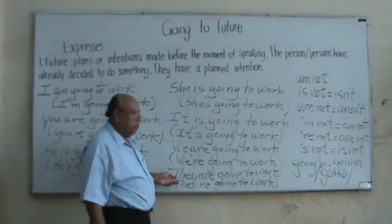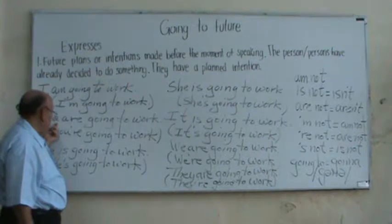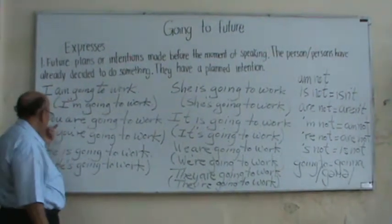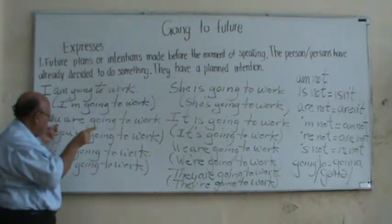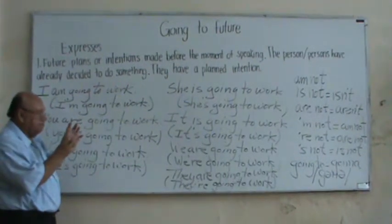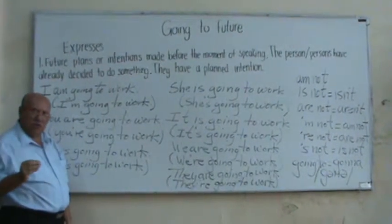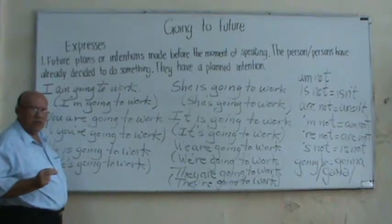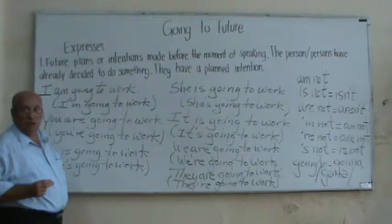To make a negative, we put 'not' after the auxiliary: I am not going to work, you are not going to work. From 'you' onward we can use three forms. For example: you are not going to work, you aren't going to work, or you're not going to work.